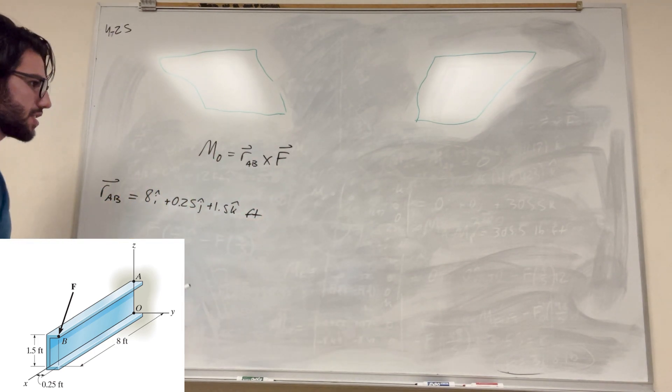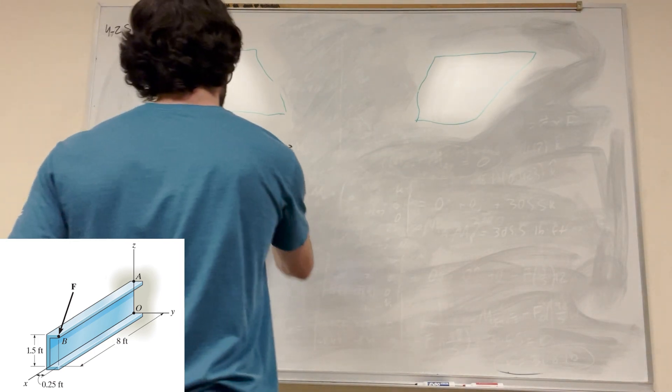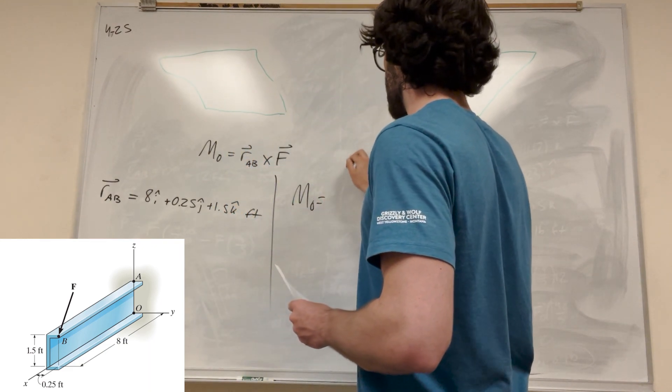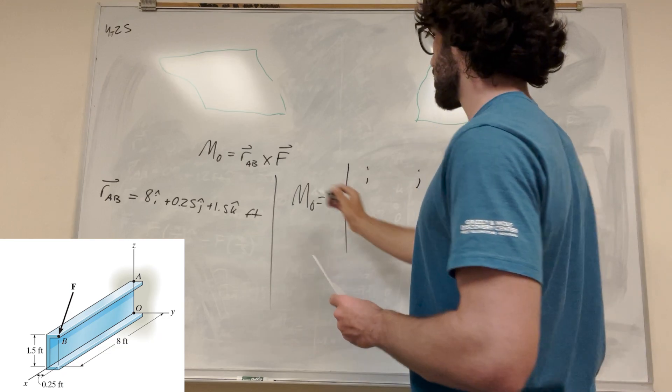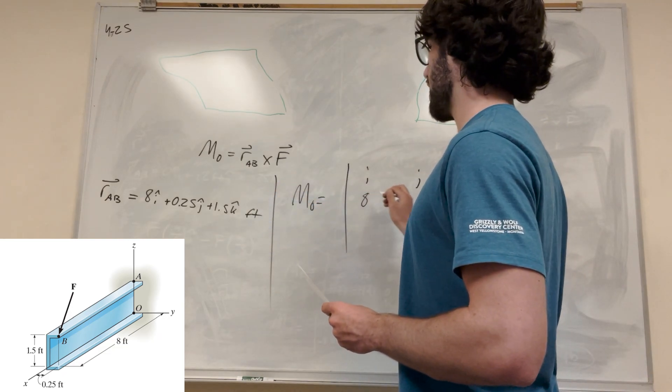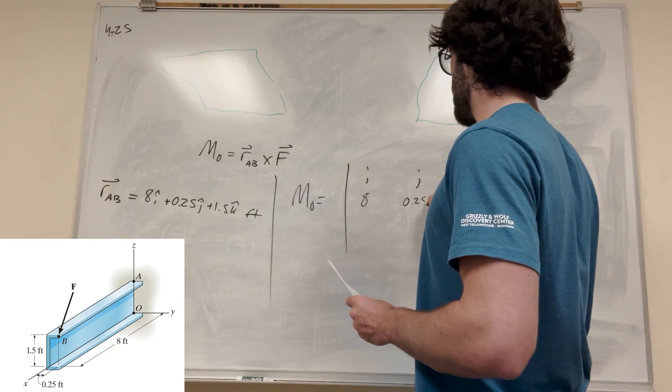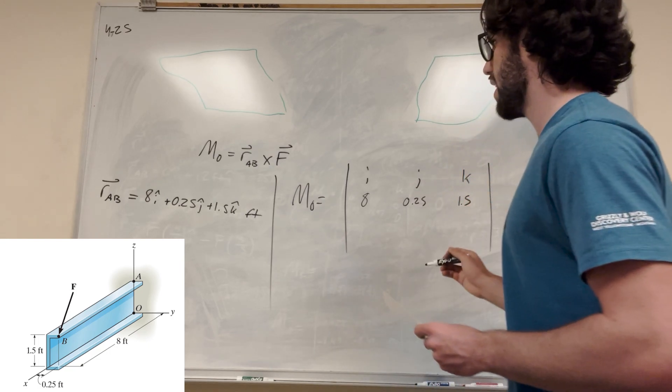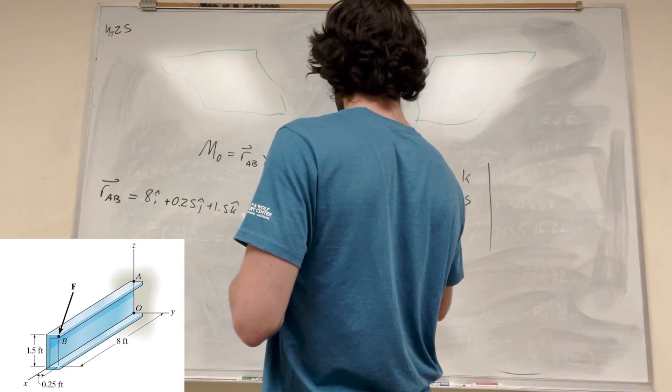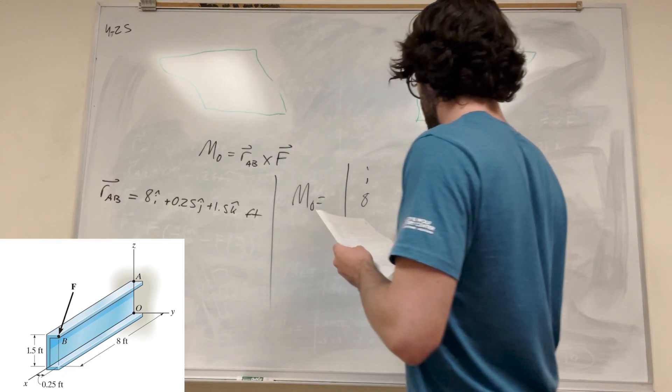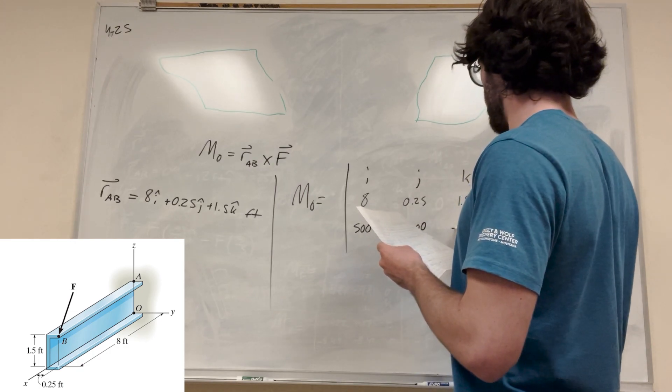So if we want to do this, all we have to do is find the cross product. So M of O, let's do cross product: i, j, k. We just have to plug in what we found here: 8, 0.25, 1.5, and then force, it gives it to us, 500, negative 200, negative 700.